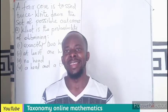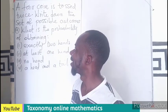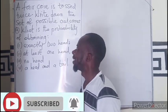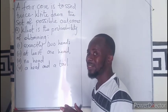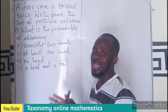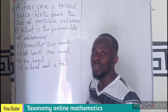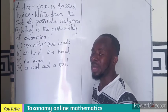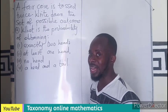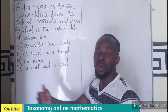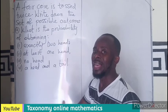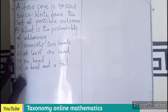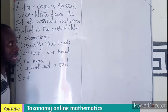Welcome, let's solve this question on probability: tossing a coin twice. A fair coin is tossed twice — a fair coin simply means that the chances of getting a head and a tail are 50/50, there is no bias in it. We have to write down the set of possible outcomes. We let X equal the set of possible outcomes.